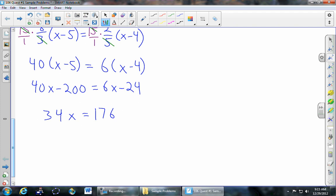And then finally divide both sides by 34. And we've got 176 over 34, which is okay. But we can reduce. Both of these numbers are divisible by 2. So it should reduce. And we get 88 over 17.